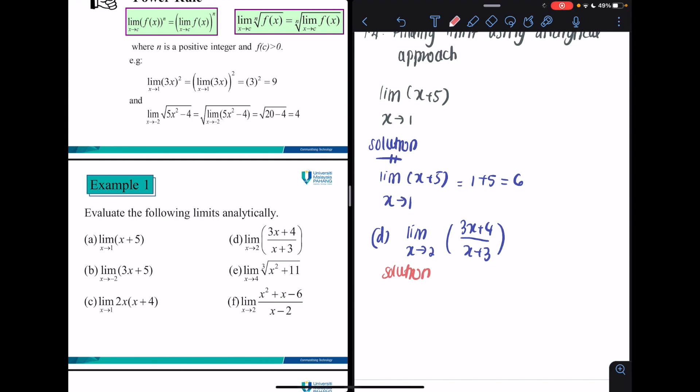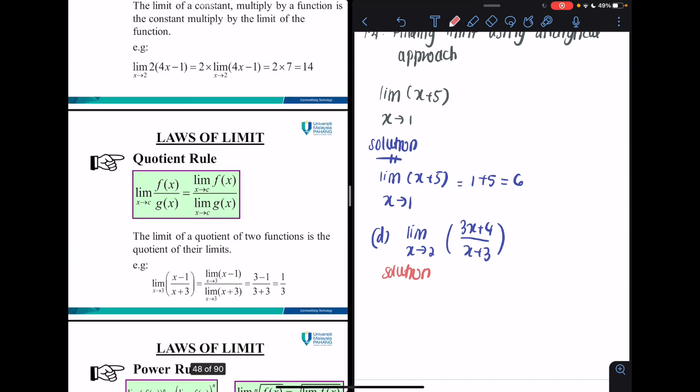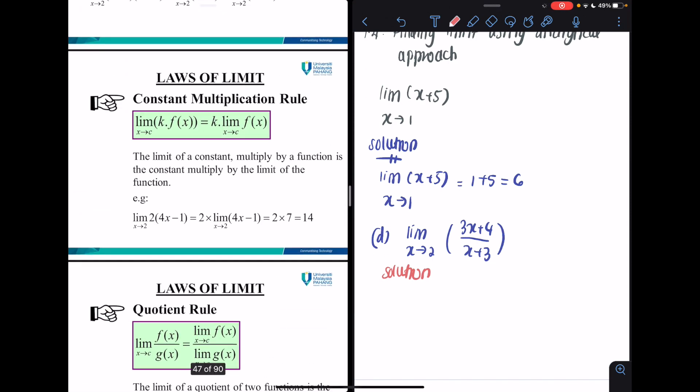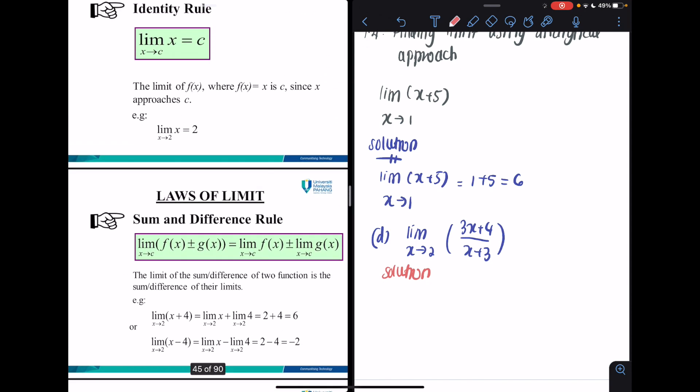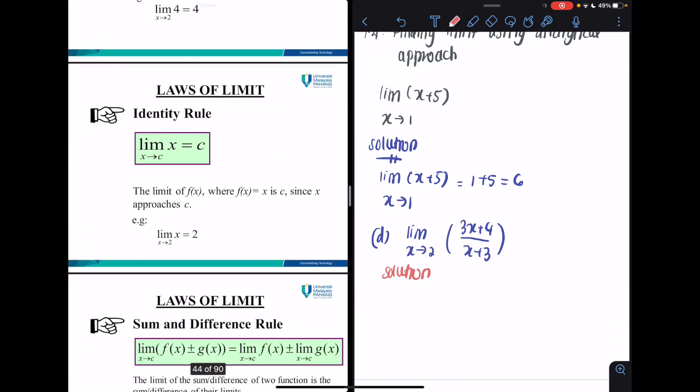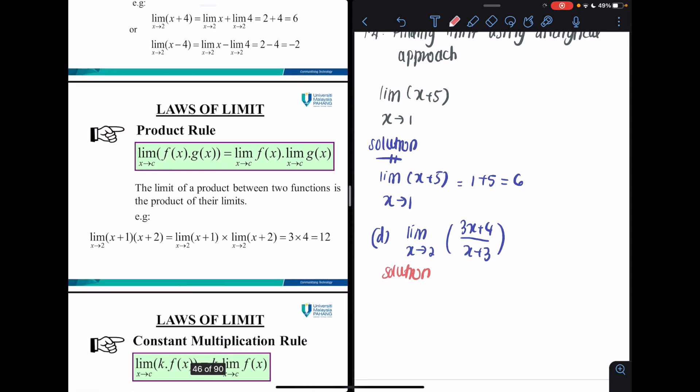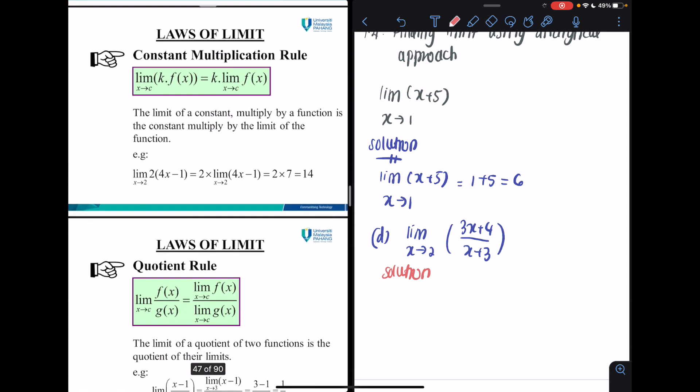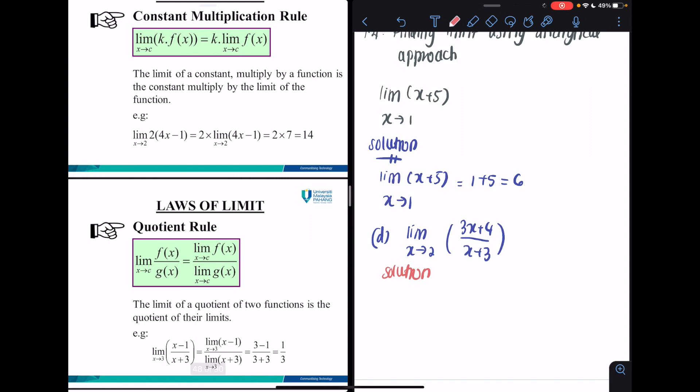Then you can simply use the quotient rule. You have to apply the quotient rule in order to solve this problem. We will get the limit as x approaching 2 for 3x plus 4 divided by the limit of x plus 3 for x approaching 2.